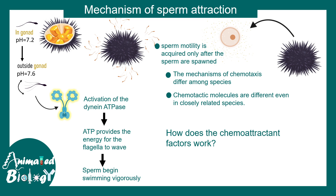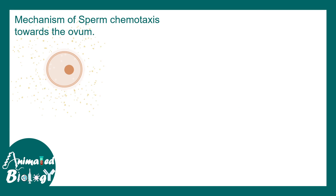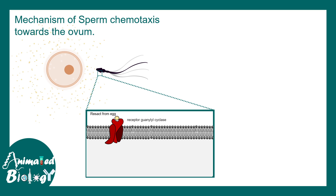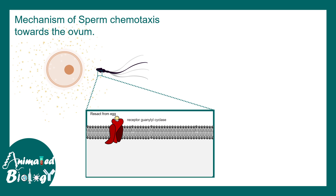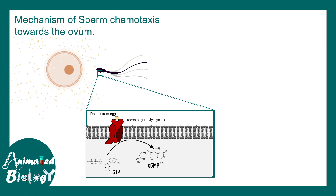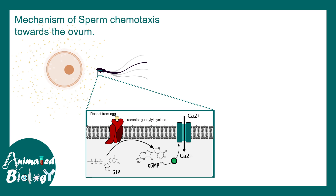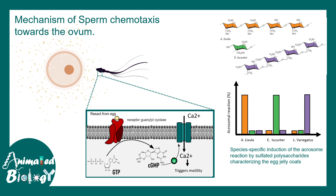The key question is how the chemoattractant factor works to give the sperm directionality. On the sperm membrane, there are specific receptor guanylyl cyclases that bind specific molecules secreted by the egg. This triggers a signal activating GTP conversion to cyclic GMP. Cyclic GMP-gated cation channels then open, causing calcium influx, which triggers sperm motility.